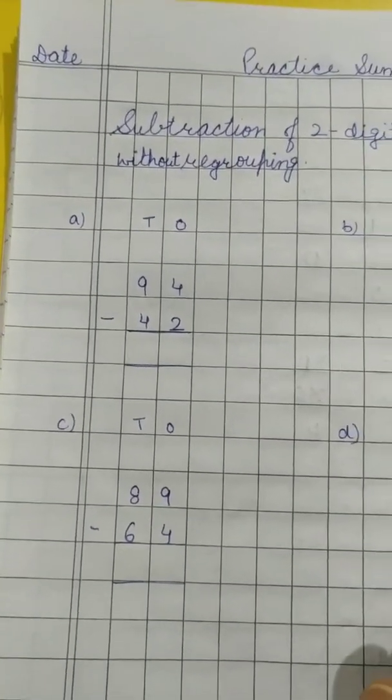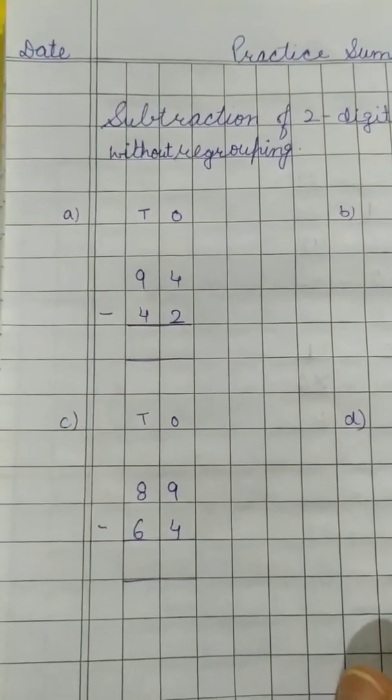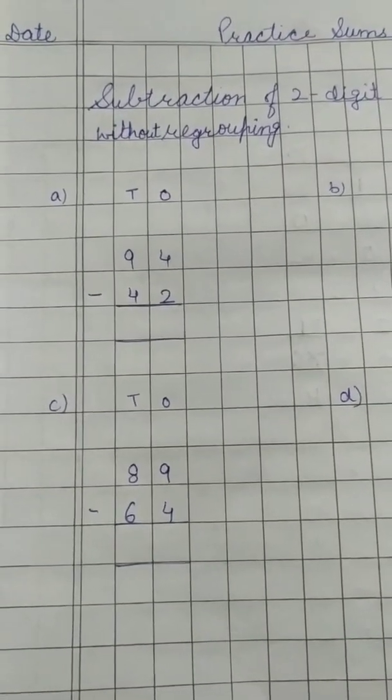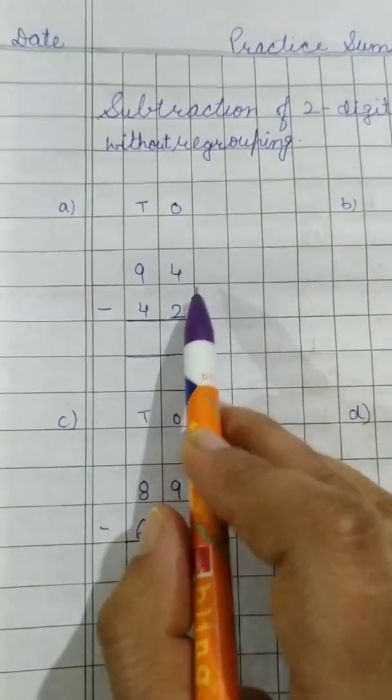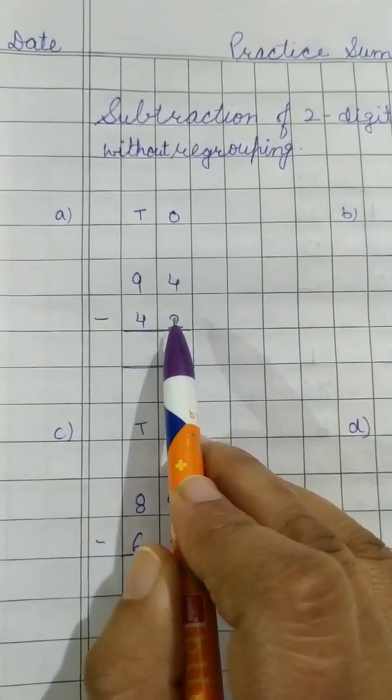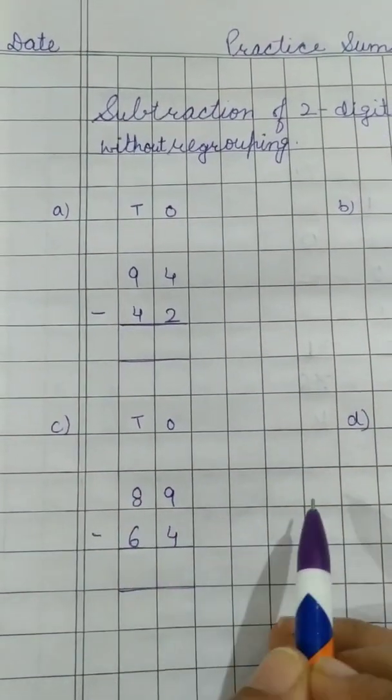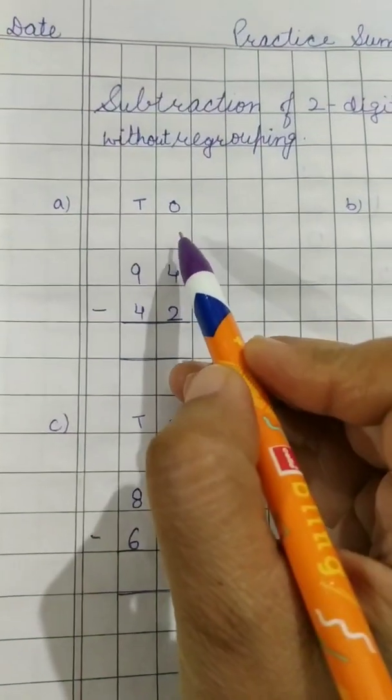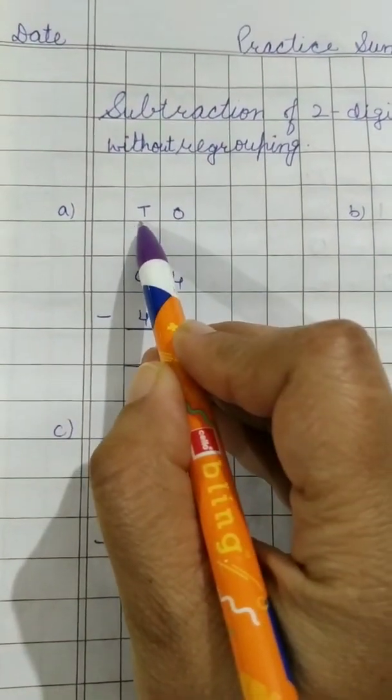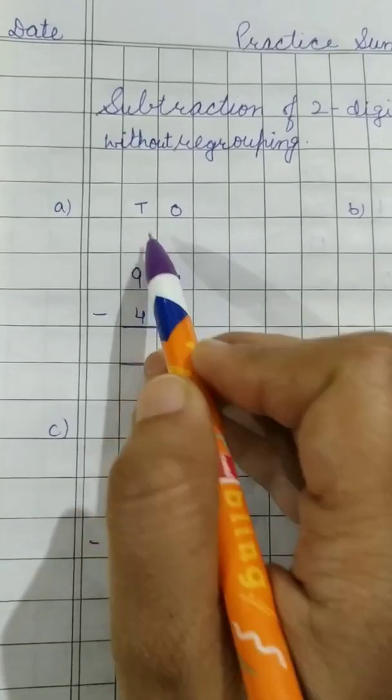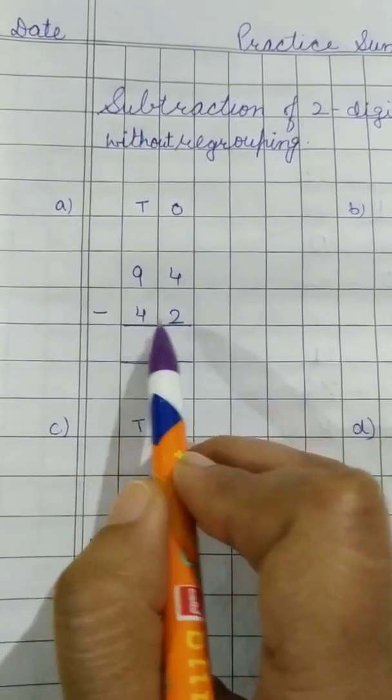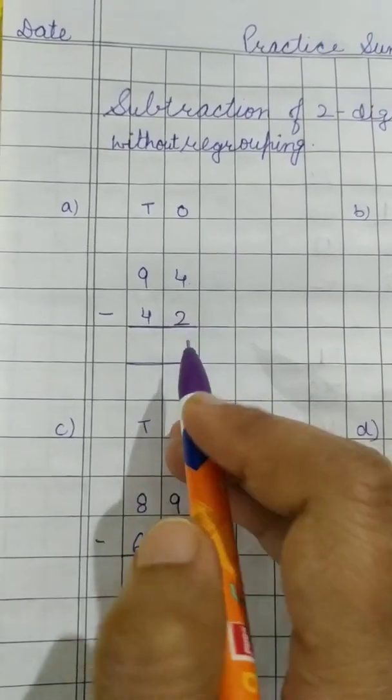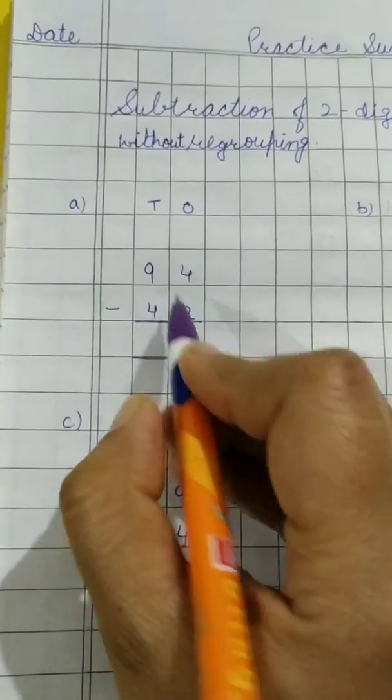Now, next questions which we are going to do are subtraction of 2 digit number without regrouping. Without regrouping means without borrowing. I am going to do 2 questions for you and 2 questions you have to do yourself. See children, first one. Ones tens, you have to write as we had done earlier also. Then leave one box here. 94 minus 42. 4 minus 2, 2.